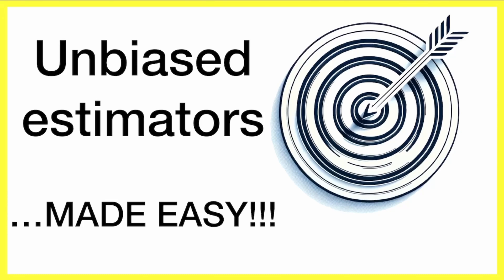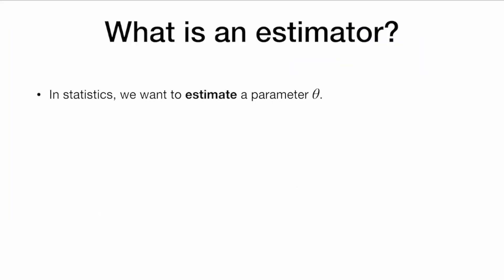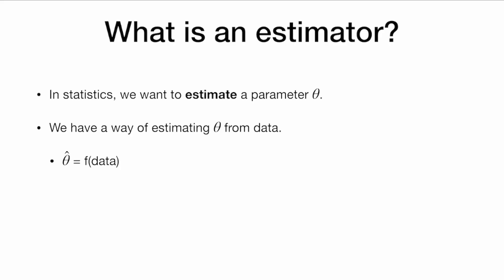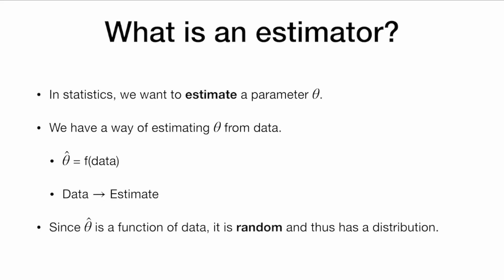Let's learn what it means for an estimator to be unbiased. So what is an estimator? In statistics, we want to estimate a parameter, theta. Suppose we have a way of estimating theta from the data. So theta hat, our estimate, is a function of the data — we put data in and we get out an estimate. And since theta hat is a function of the data, it is random, and thus has a distribution.